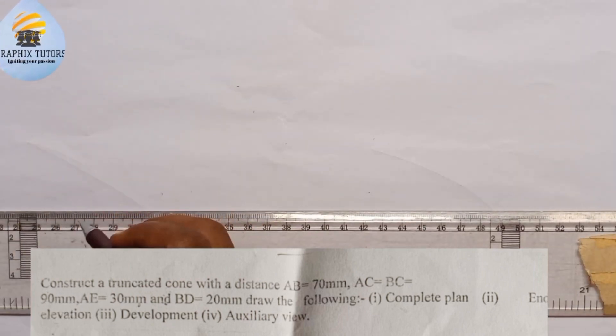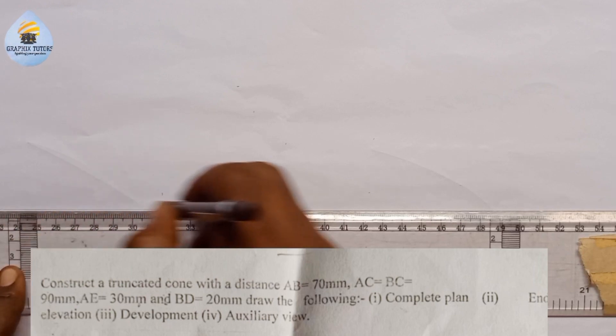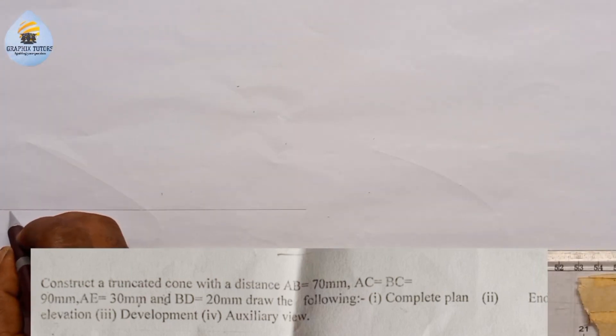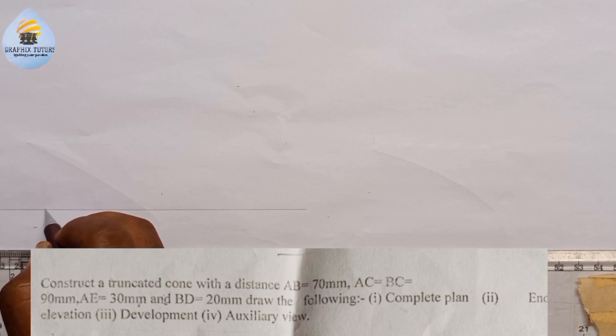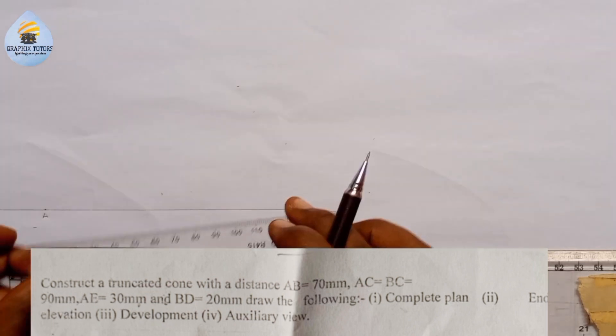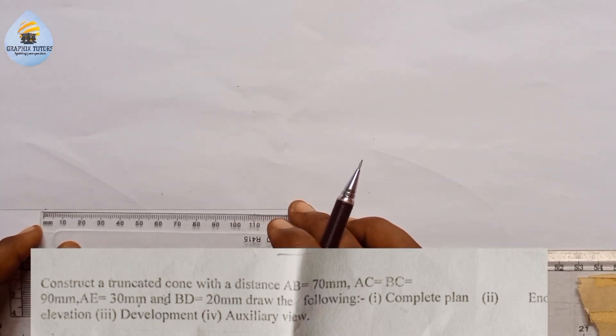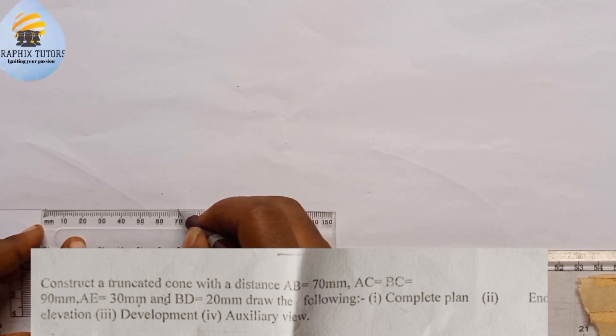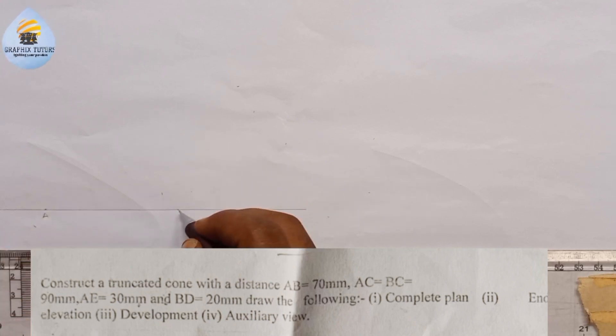I'll draw a line this way and pick a point on that line. I'll say this is A. From that line, I'll measure AB which is 70. So from 0 to 7 is 70. That is my point B.